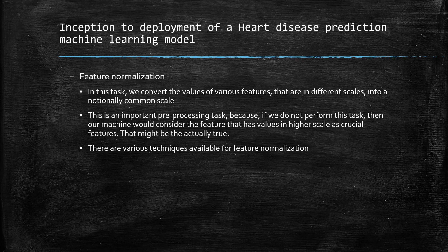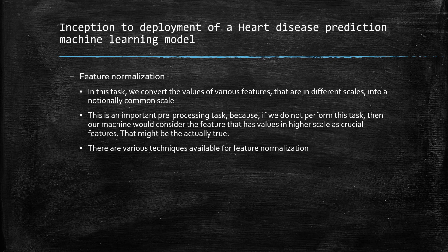Feature normalization is one more task we perform as part of data preprocessing. In this task, we convert the values of various features that are in different scales into a common scale. For instance, if one feature has values in the thousands and another has values in the tens, we apply feature normalization so that the machine learning model does not treat the feature with a higher range as more important than the one with a lower range. Feature normalization is therefore a very important step during data preprocessing.